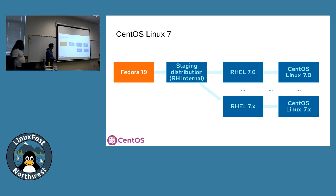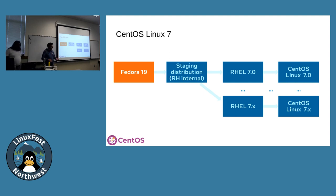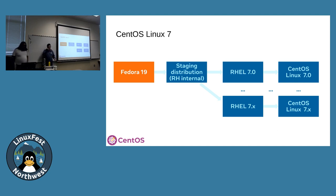CentOS Linux 7 was originally branched from Fedora 19, which was released around 2012 — it predates my involvement in this ecosystem. Within Red Hat, they took Fedora 19, branched it into an internal staging distribution which acted as a kind of primordial soup. Employees and developers within Red Hat developed the distribution and ultimately released Red Hat Enterprise Linux 7 — the thing you can buy — and then point releases 7.1, 7.2, 7.3 followed. Independently, the CentOS Linux project would take the sources from RHEL, rebuild it, and release CentOS Linux, so you'd have CentOS Linux 7.0 roughly equivalent to RHEL 7.0, and so on.